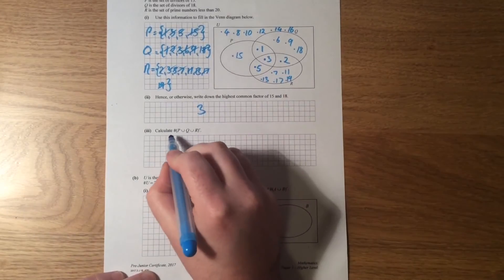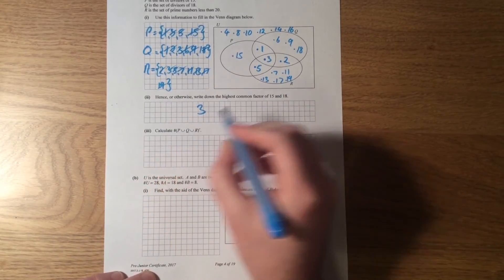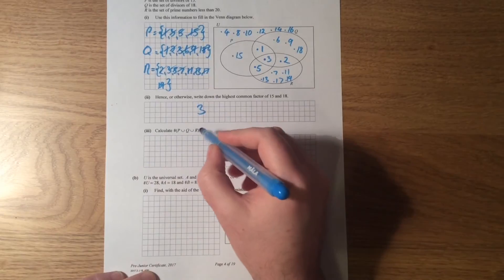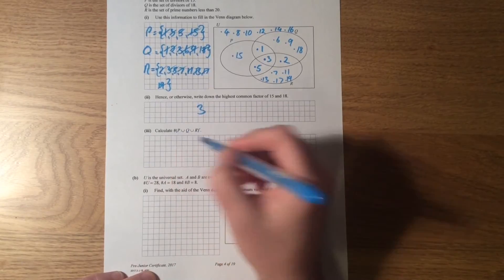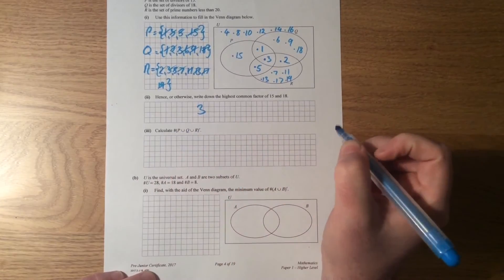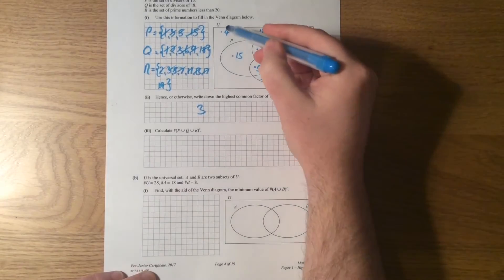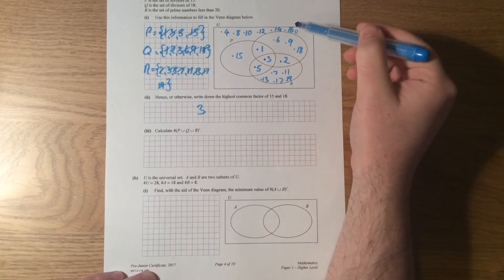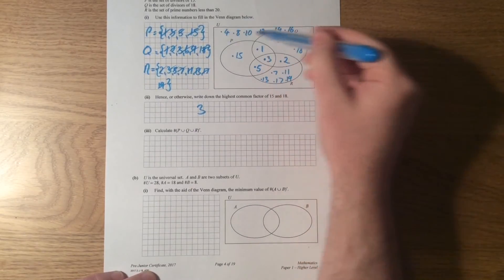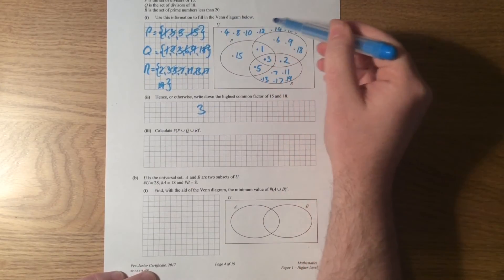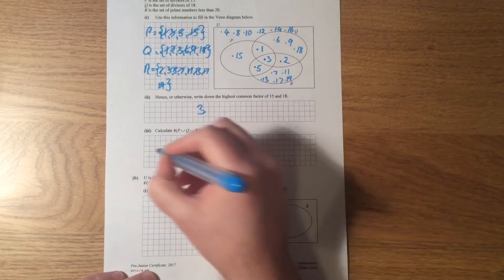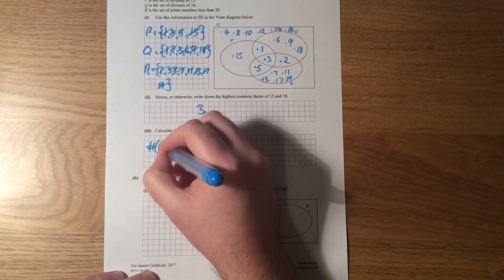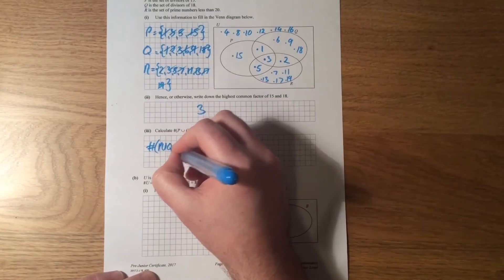Calculate the cardinal number of P union Q union R complement. Remember, this little hashtag, as you guys probably know it as, means the number of. It doesn't actually mean the individual element. So for example, the elements they're talking about are 4, 8, 10, 12, 14, 16—that's not what it's looking for. It's looking for how many are there, and it's 1, 2, 3, 4, 5, 6.